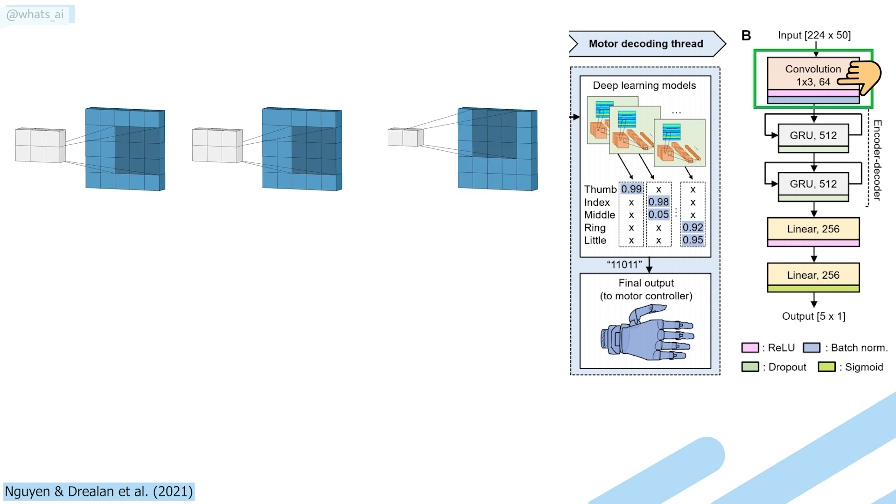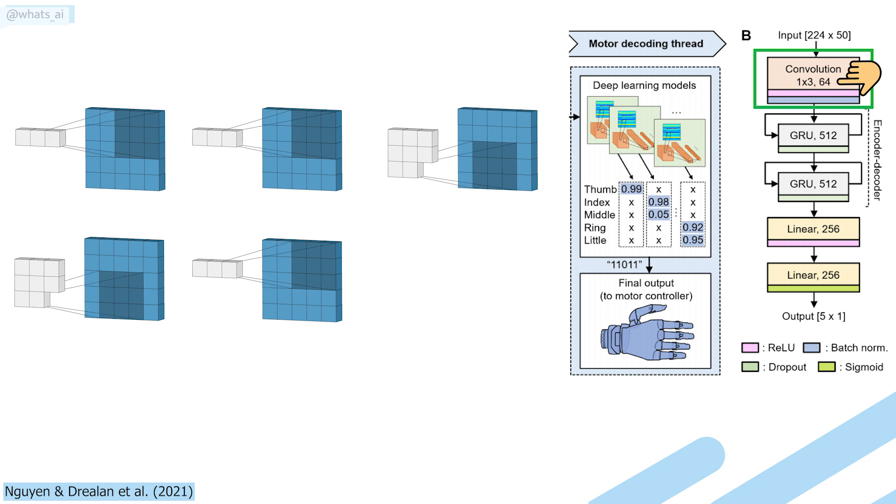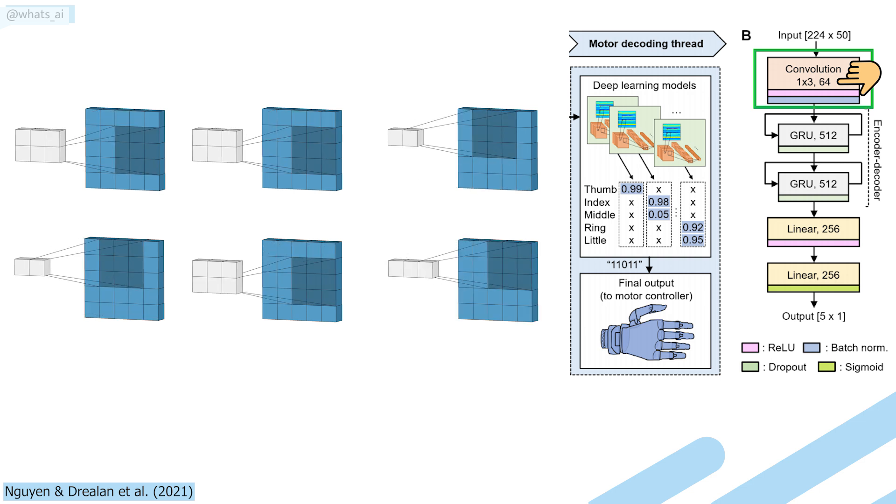So 64 different representations. These filters are the network parameters learned during training to correctly control the hand when finally deployed.